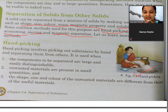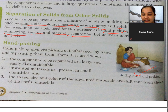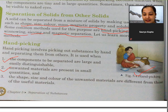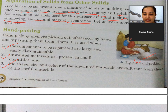Handpicking involves picking out substances by hand and separating them from others. It is used when the components to be separated are large and easily distinguishable - aise component jo large size mein hote hain aur aasani se unhein alag kiya ja sake. Second, unwanted materials are present in small quantities - unwanted materials jo small quantities mein hote hain unko alag kiya jaata hai. Third, the shape, size, and color of the unwanted materials are different from those of the useful materials.